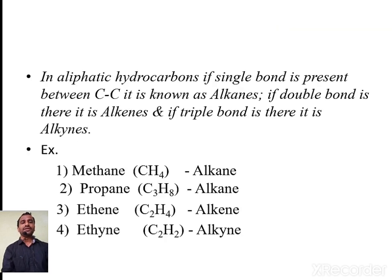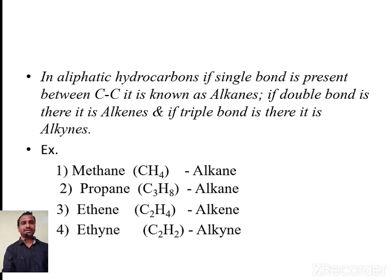This classification depends upon the nature of the bond present between the two carbon-carbon atoms in a hydrocarbon. In aliphatic hydrocarbons, if a single bond is present between the two carbon-carbon atoms in a molecule, then those aliphatic hydrocarbons are called alkanes. If a double bond is present, it is called alkenes. And if a triple bond is present, it is called alkynes.